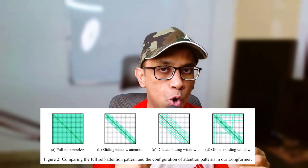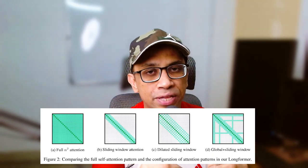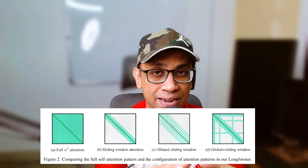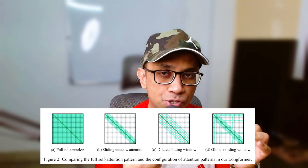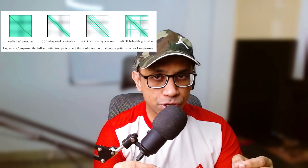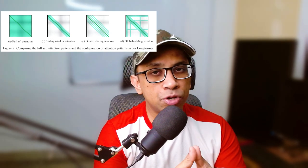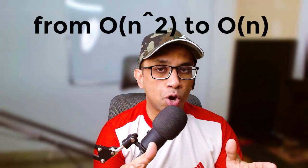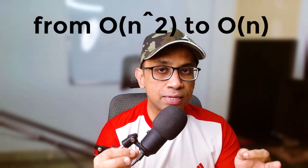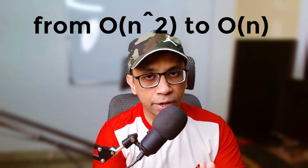The first concept is sliding window attention. Instead of attending to all positions in the input sequence as in standard self-attention, the Longformer attends only to a sliding window of adjacent positions. This reduces the computational complexity of the attention mechanism from O(n²) to O(n), where n is the length of the input sequence.